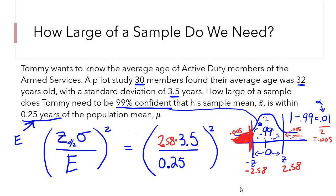Okay. So, what's my answer? Tommy needs 1,301 active duty members of the armed services. So that he can be 99% confident that his sample mean will be within 0.25 years of the population mean.